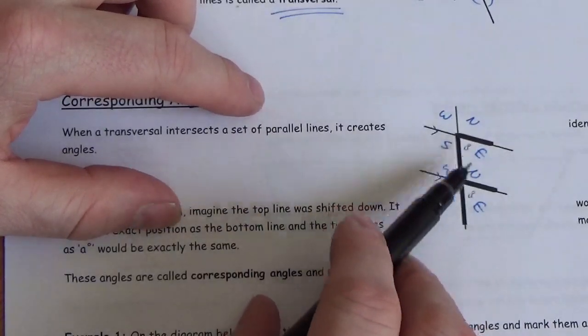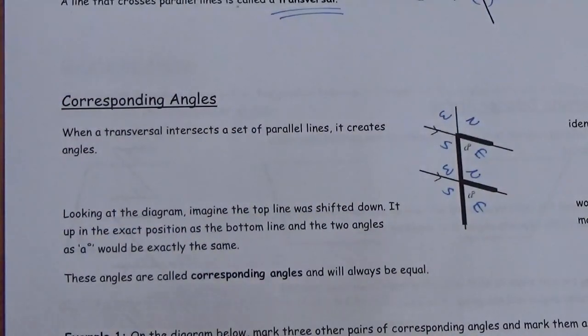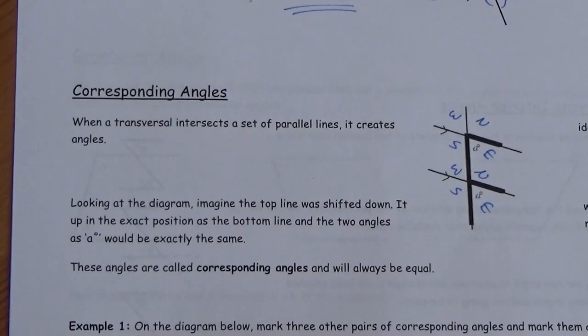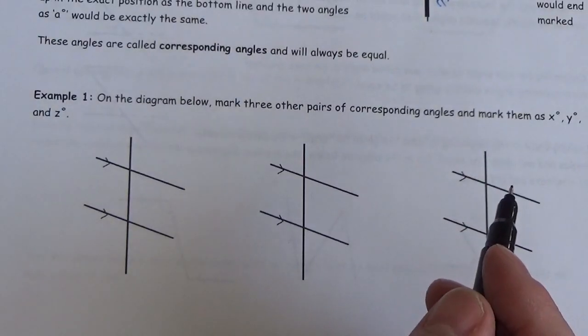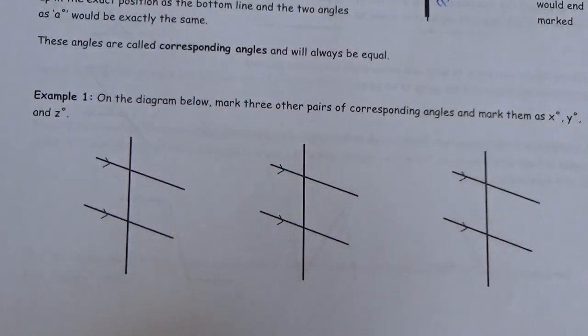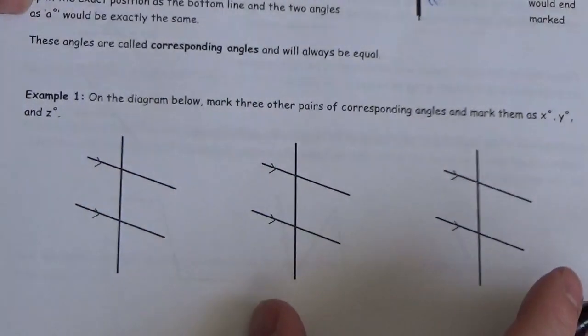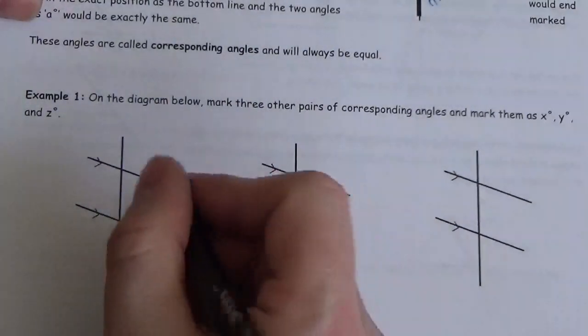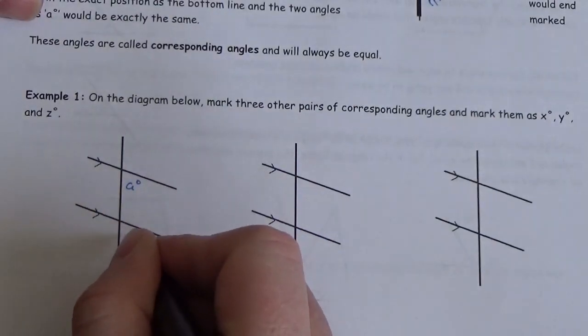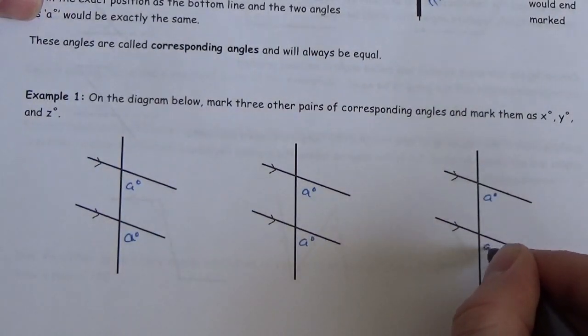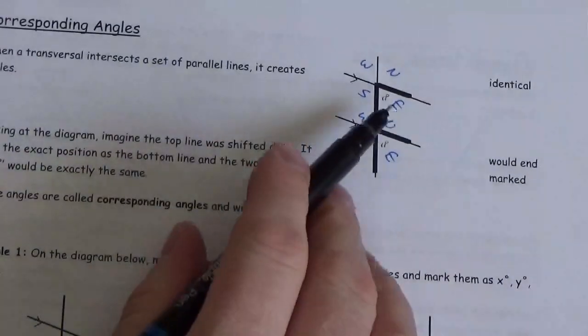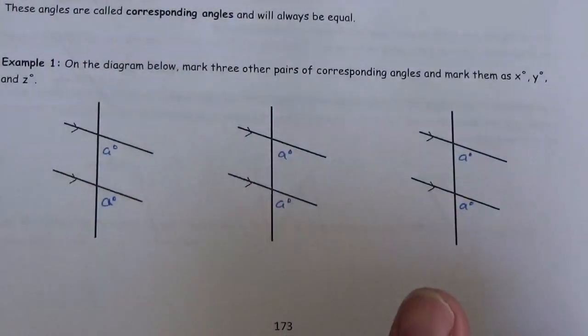So angle A and this angle A here — those two angles are identical in terms of their size. The question says: on the diagram below, mark three other pairs of corresponding angles and label them X, Y, and Z. They've already indicated that these angles are corresponding and named them both A in the illustration above. Now we're supposed to find three other pairs.